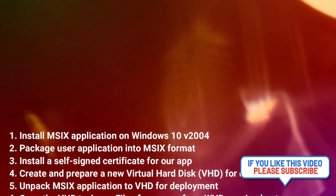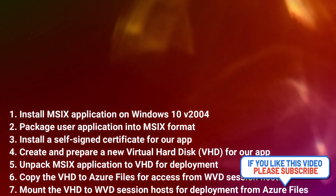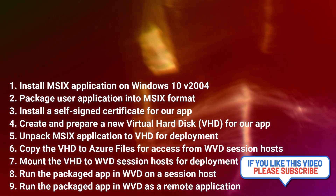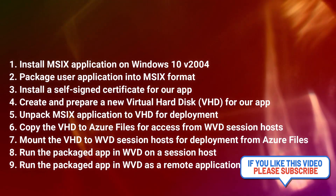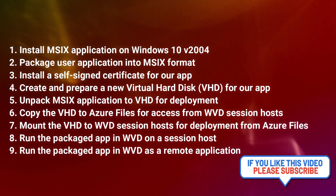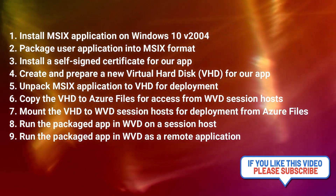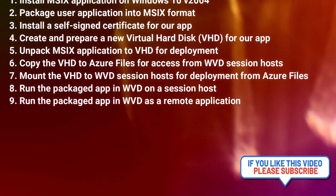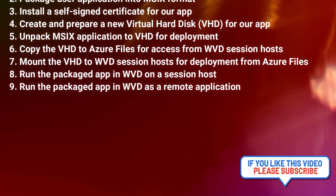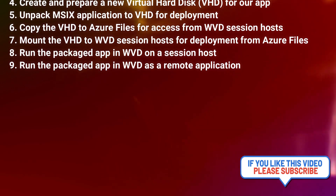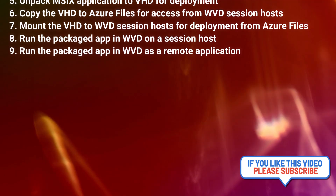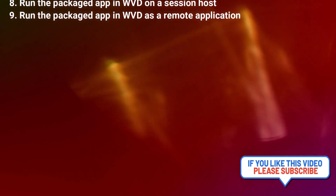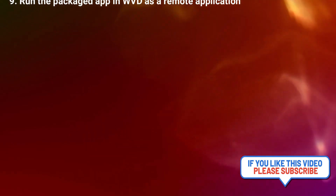We will package user applications into MSIX format. We'll install a self-signed certificate for our app. We will create and prepare a new VHD hard disk for our application. We will unpack our MSIX application to the VHD for deployment. We will copy that VHD to Azure Files for access from WVD session hosts. We'll mount the VHD to our WVD session hosts for deployment from Azure Files. We'll run the packaged app in WVD on a session host and also as a remote application.